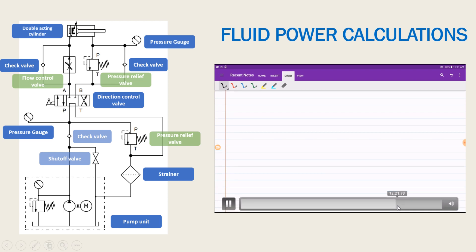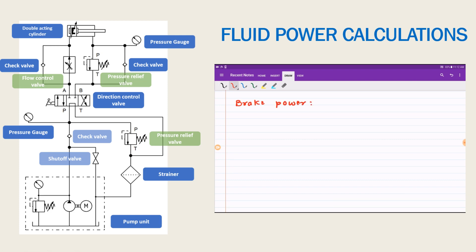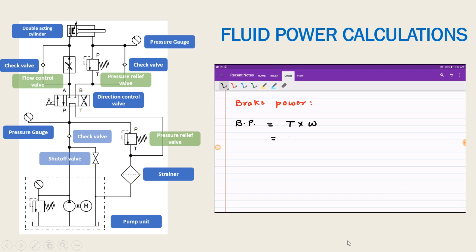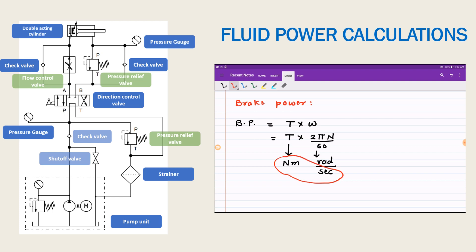Another important relation is brake power — the power available at the shaft. The basic relation is torque times angular speed: 2 pi n divided by 60, where n is speed in rpm, T is torque in Newton meter, and omega is in radians per second. This gives Newton meter per second, that is joule per second or watt.